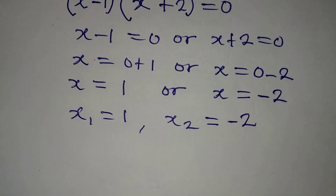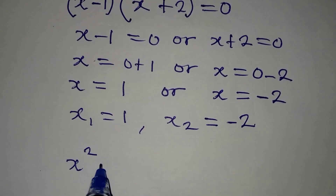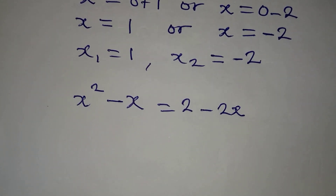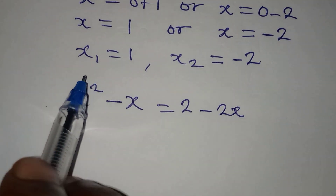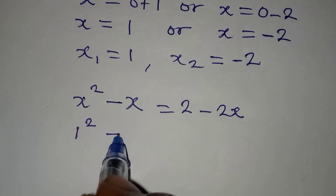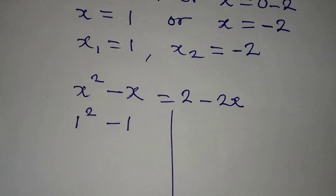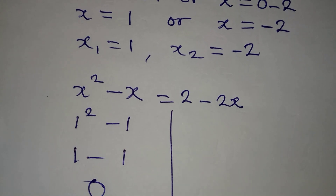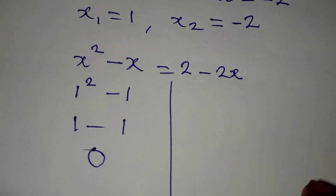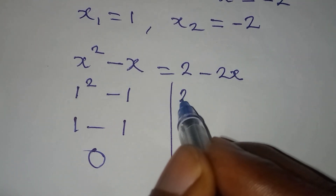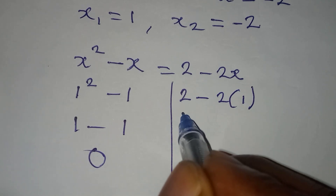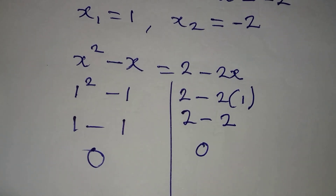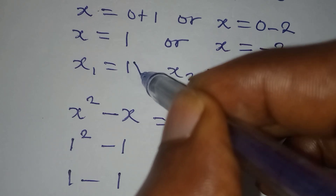Let's get the original equation back: x squared minus x equals 2 minus 2x. Let's bring the value of x1 into this — that would be 1 squared minus 1. Whatever we have on this side will be 1 minus 1, and that is 0, for the left-hand side. On the right-hand side, we have 2 minus 2 times 1, which gives 2 minus 2, which is also 0. The left-hand side and the right-hand side are the same — it's a confirmation that x1 satisfies the equation.